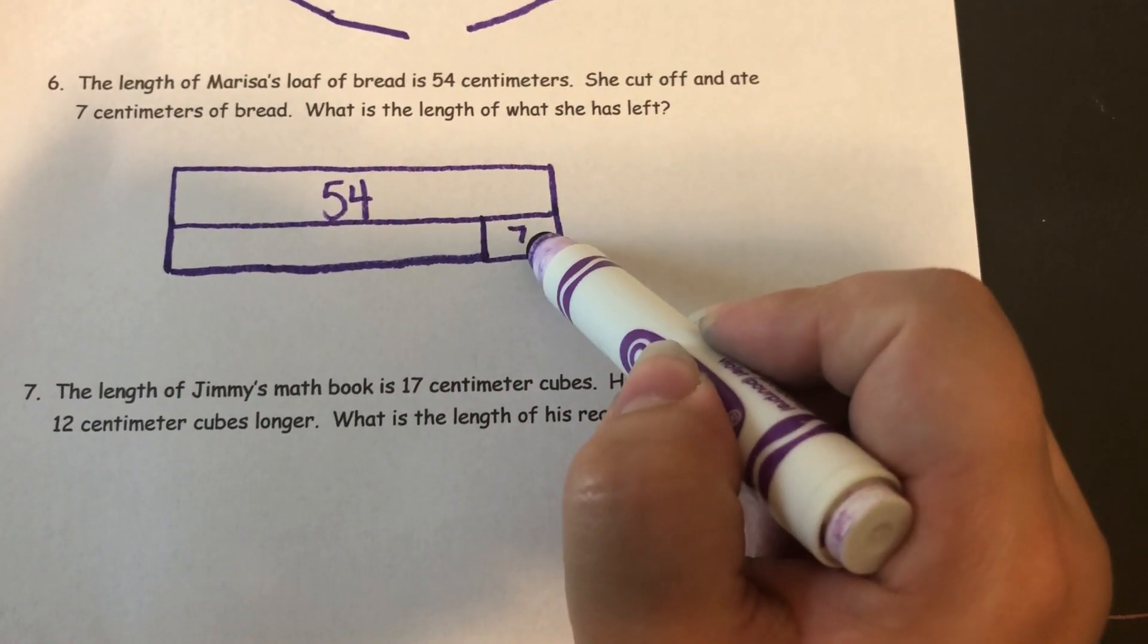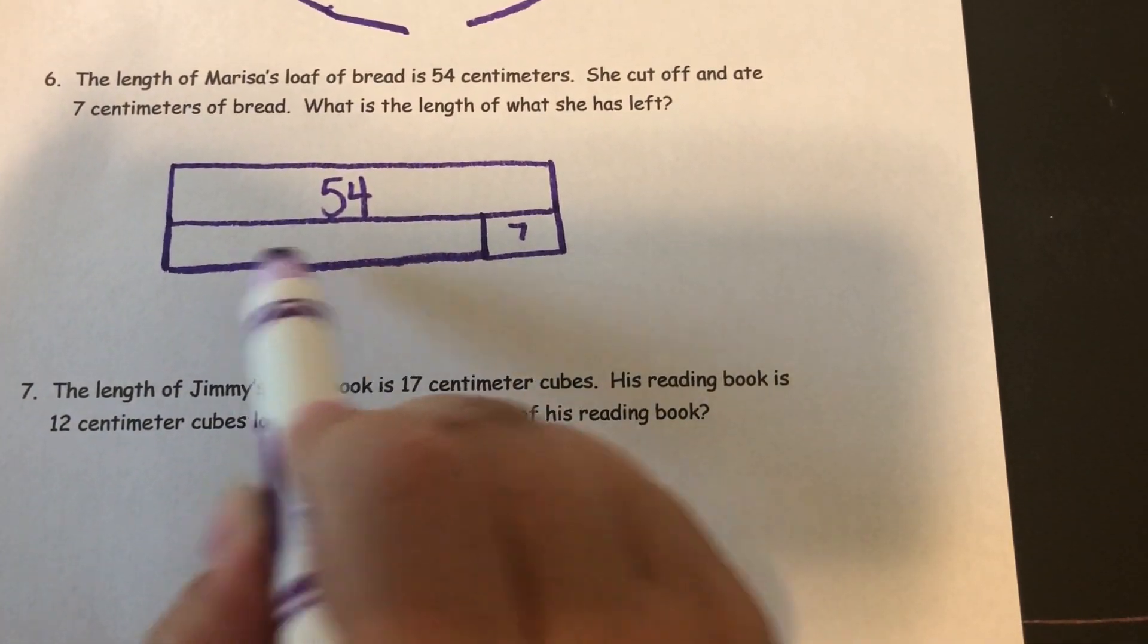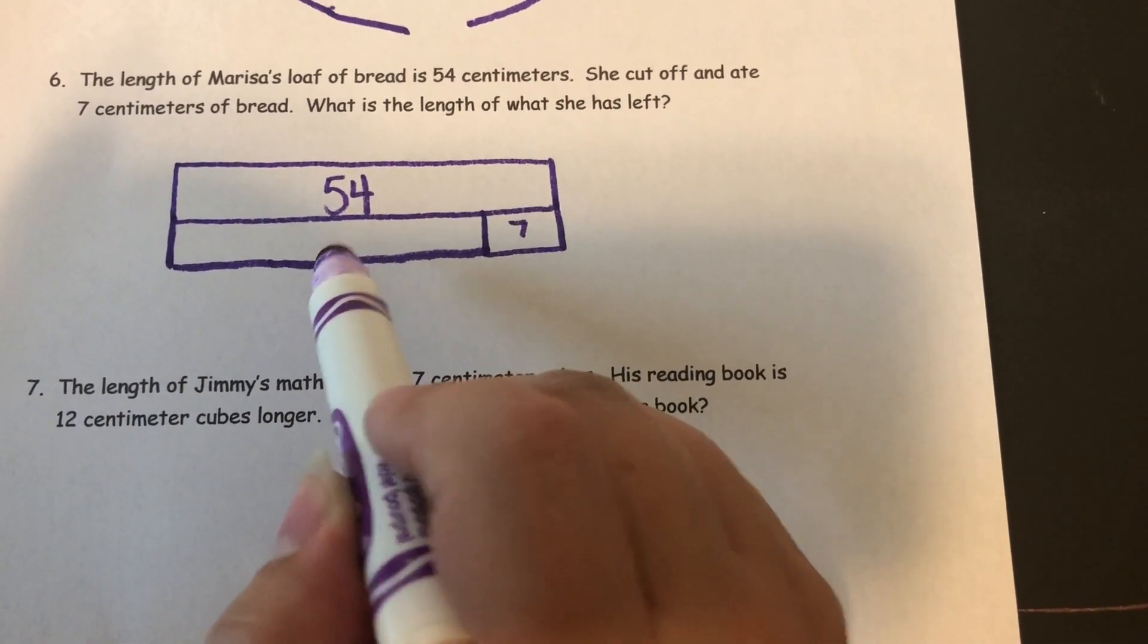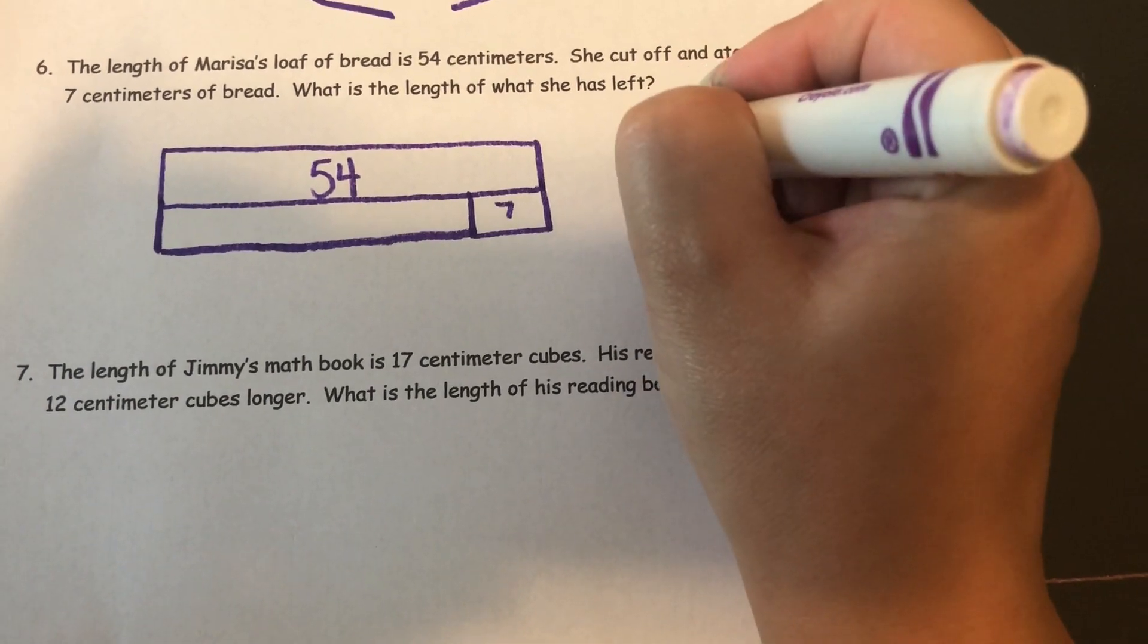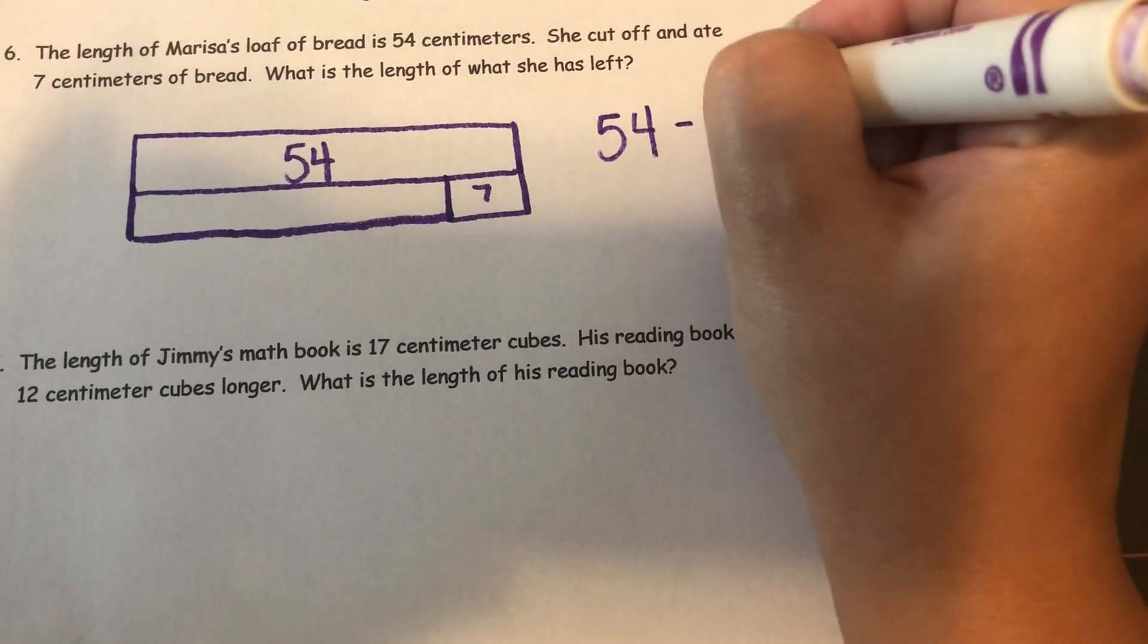So if I've got a part and a whole, if I want to find the other part, I need to subtract. So 54 minus 7.